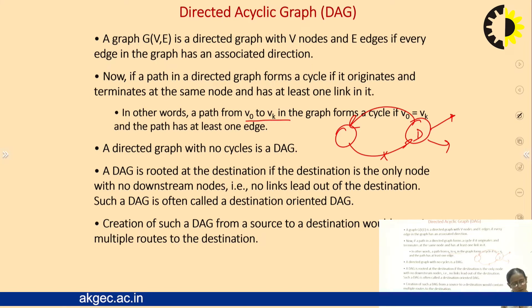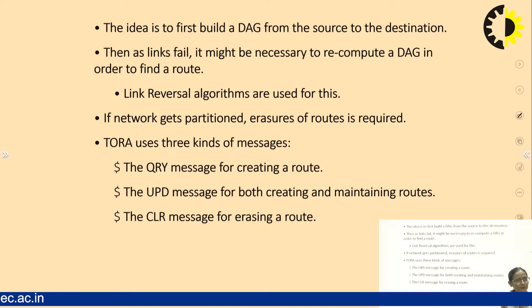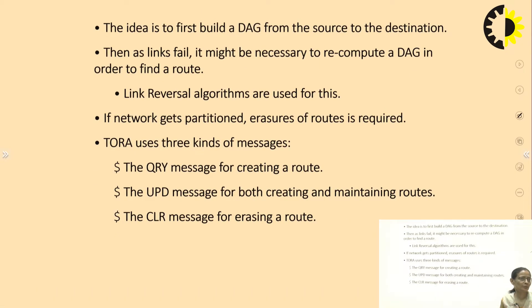The idea is to first build a DAG from source to destination. Then as links fail, it might be necessary to recompute a DAG in order to find a route. Link reversal algorithms are used for this. If the network gets partitioned, because it is meant for MANETs, if some nodes leave then the network gets partitioned and erasure of routes is required. We again go with the route finding methods.